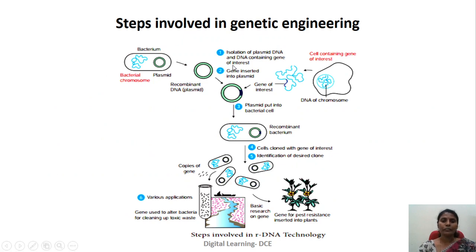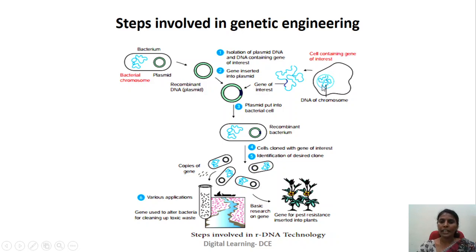In this slide we can see the steps involved in genetic engineering. On the left hand side we can observe a bacterial cell with a circular DNA molecule called a plasmid, whereas on the right hand side we have a cell with a nucleus containing a chromosome and DNA molecule. In the first step of genetic engineering we isolate the plasmid from the bacterial cell, and at the same time we isolate the DNA from the cell of our interest.